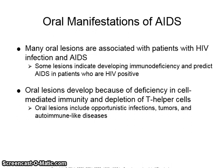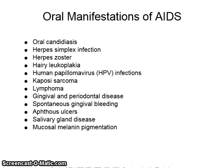Oral lesions develop because of deficiency in cell-mediated immunity and depletion of T helper cells. Oral lesions include opportunistic infections, tumors, and autoimmune-like diseases. The oral manifestations of AIDS include oral candidiasis, herpes simplex, herpes zoster, hairy leukoplakia, HPV infections, Kaposi's sarcoma, lymphoma, gingival and periodontal disease, spontaneous gingival bleeding, aphthous ulcers, salivary gland disease, and mucosal melanin pigmentation.